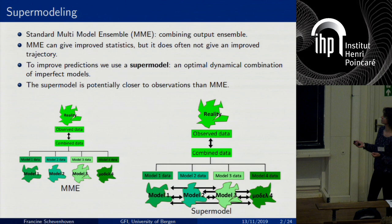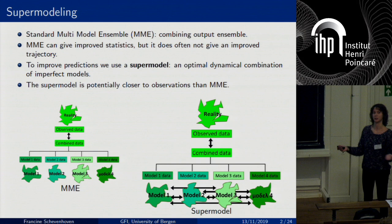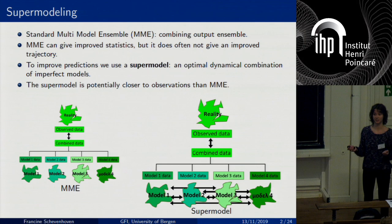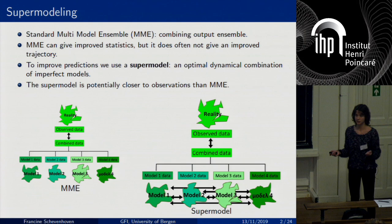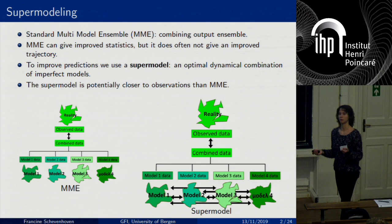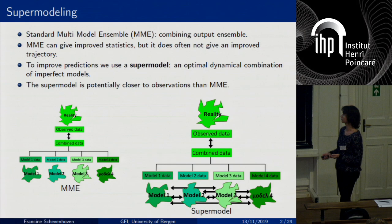What I really like about a supermodel is that you can create new dynamical behavior. For example, if you have two models that have the same error but for different reasons, letting them interact can resolve this error. Another advantage is that you can correct errors in an earlier stage compared to standard multimodal ensemble. Importantly, in a supermodel the models are synchronized, so you do not suffer from variance reduction and smoothing. The models talk to each other and together decide on a common trajectory. So you get not only improved statistics but also an improved trajectory.